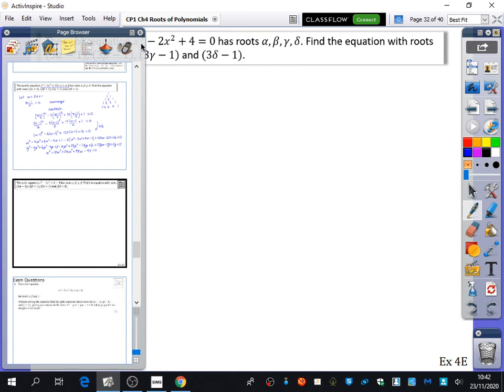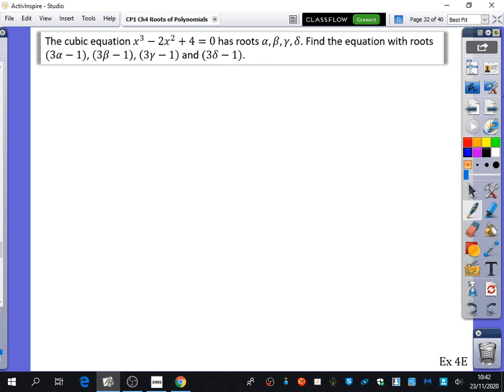So we're going to just do one more example together. This time it's a cubic equation that has these roots. So to start with, we would say what w is equal to. You'll go in with that substitution. I think the board has stopped working for me. So I'm going to let you have a go at doing this one. Same kind of substitution. And then we're going to try exercise 4E.